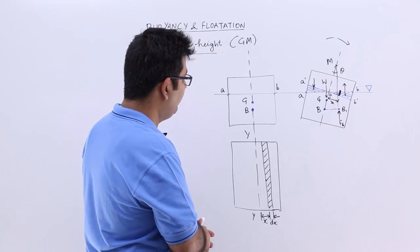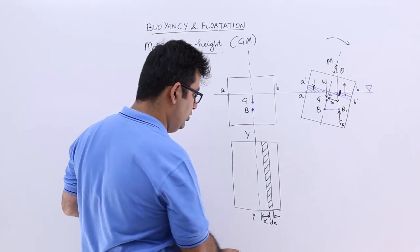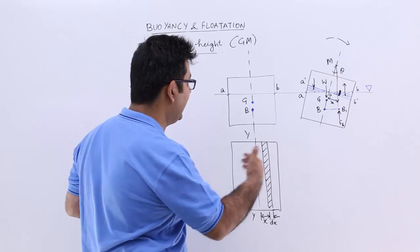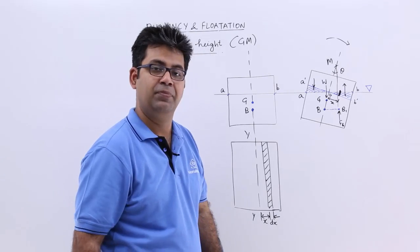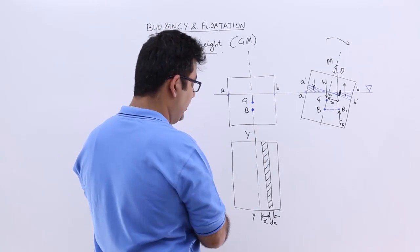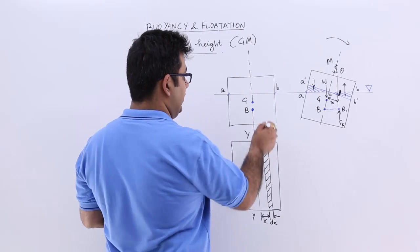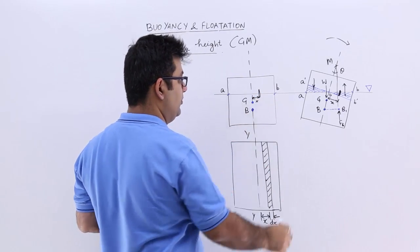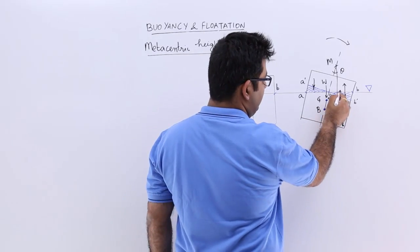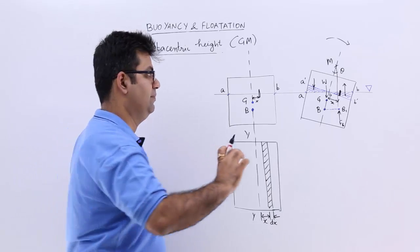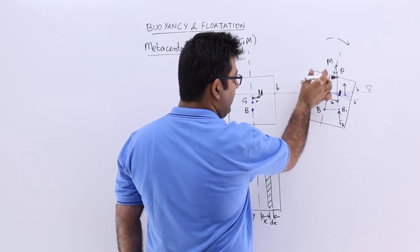Now, looking at the plan of the body, we assume a small strip on the right hand side at a distance x from the axis, with a thickness of dx. In the figure, this is the strip at distance x from the axis. We know the thickness is dx and the distance from the axis is x.